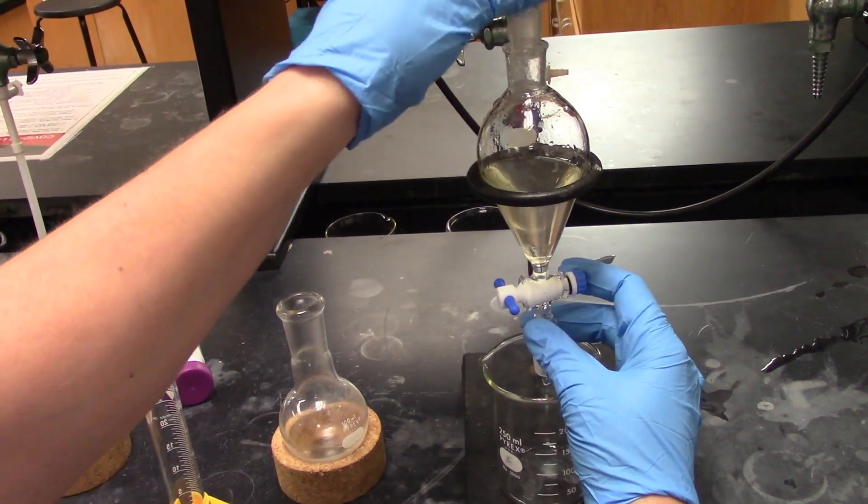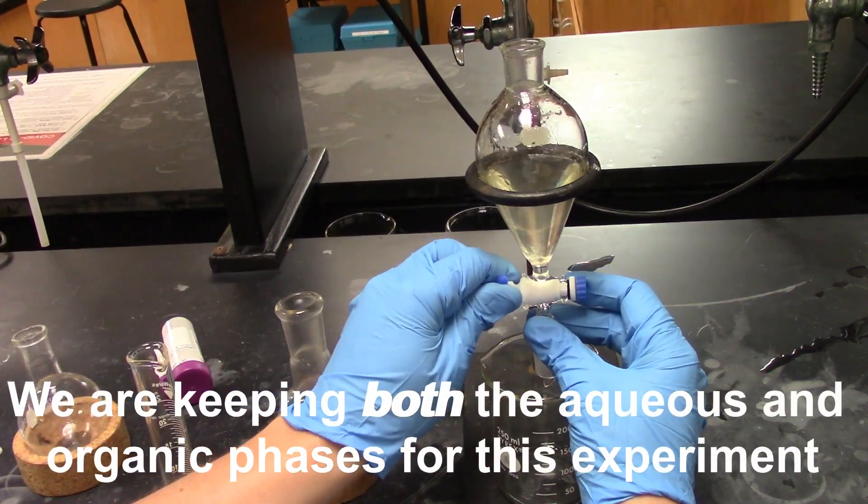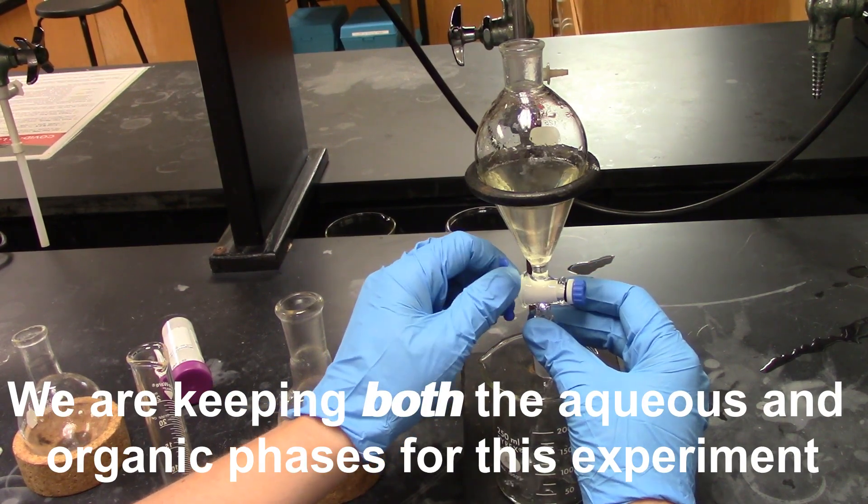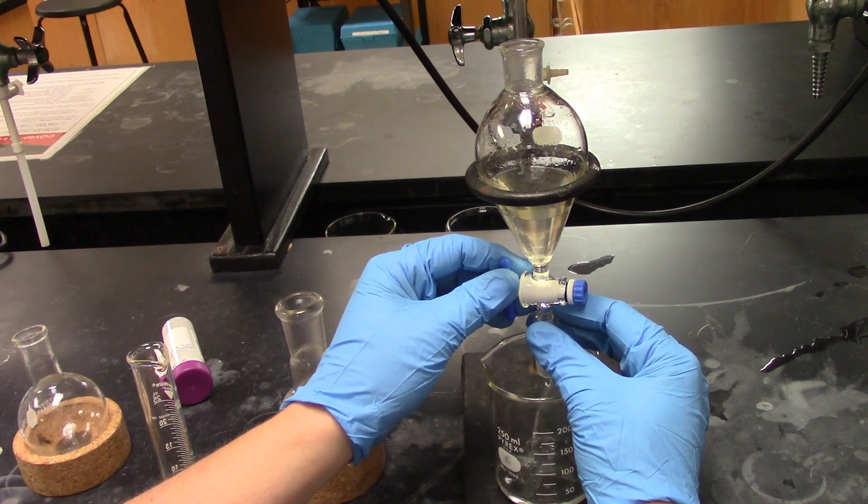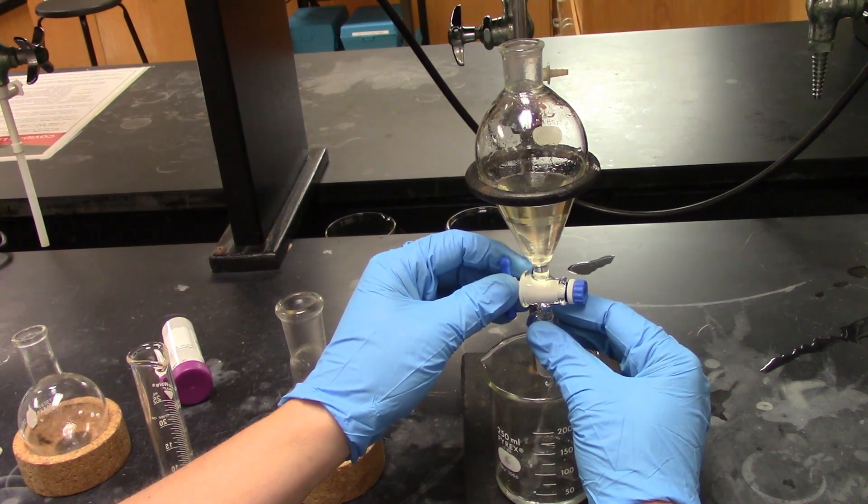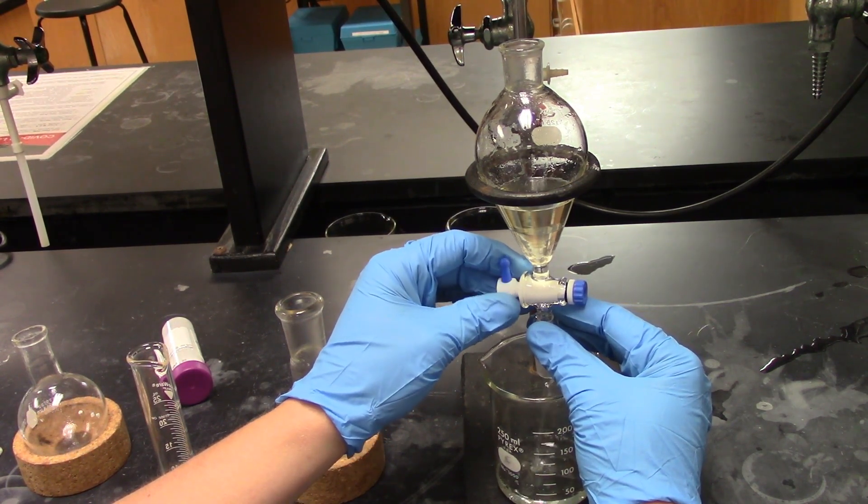All right, so what I'm going to do is save this aqueous phase that's here on the bottom. This is going to contain one of my products. Normally when we do these separations, you're typically throwing something out, usually organic or aqueous depending on what we're trying to extract. In this case, both layers contain what we want to isolate.